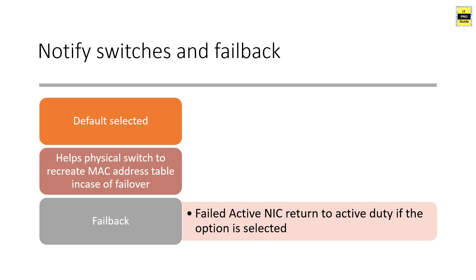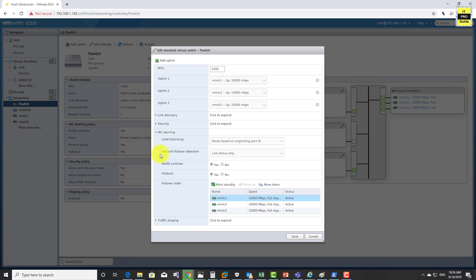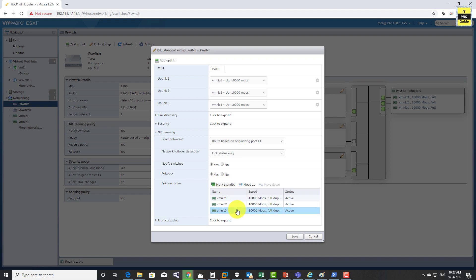The failback option controls what happens after a failure is resolved. When the standby NIC becomes operational during a failure, and then the original active NIC becomes operational again, setting failback to yes means the original NIC becomes active again and the standby NIC returns to standby. You can also configure the failover order to designate which NICs should remain in standby, and reorder them by moving up and down in the list.